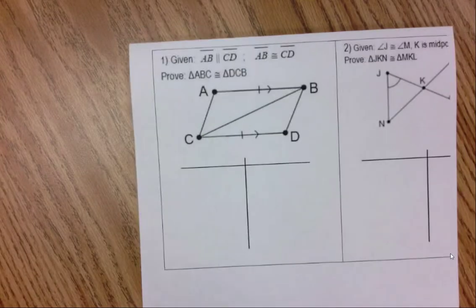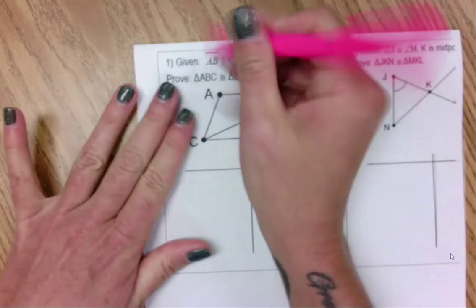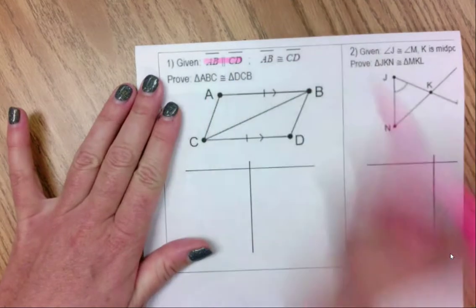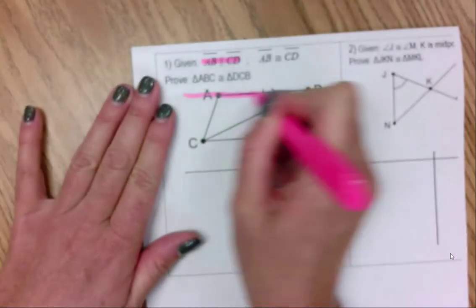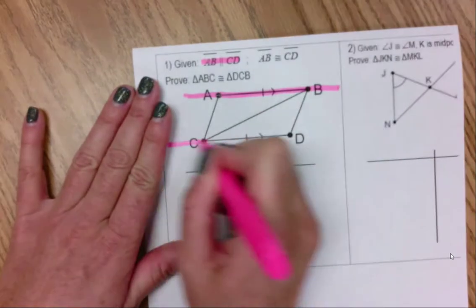All right, here's a proof with parallel lines. This tells me that AB is parallel to CD. Like I said, always highlight your parallel lines.